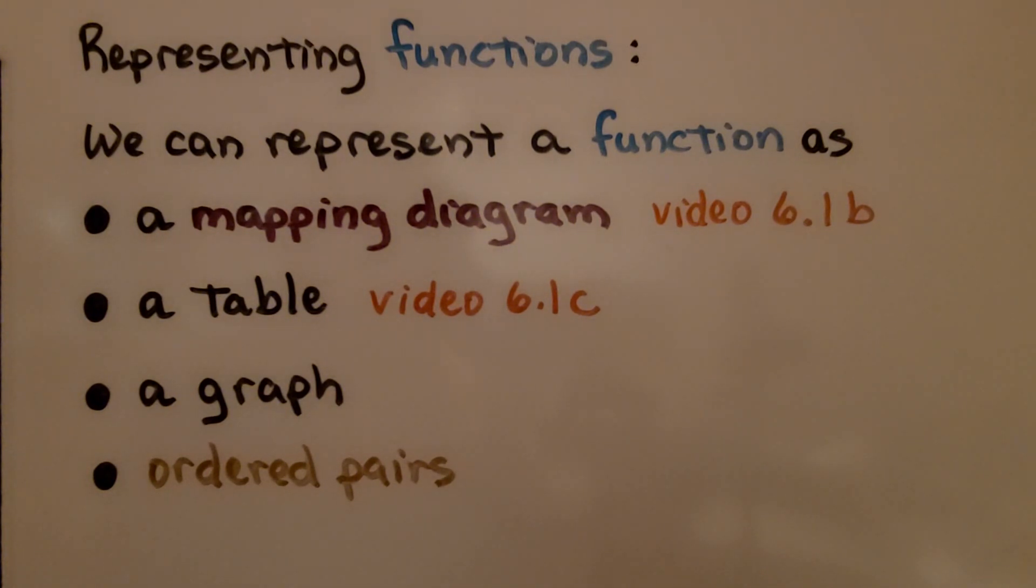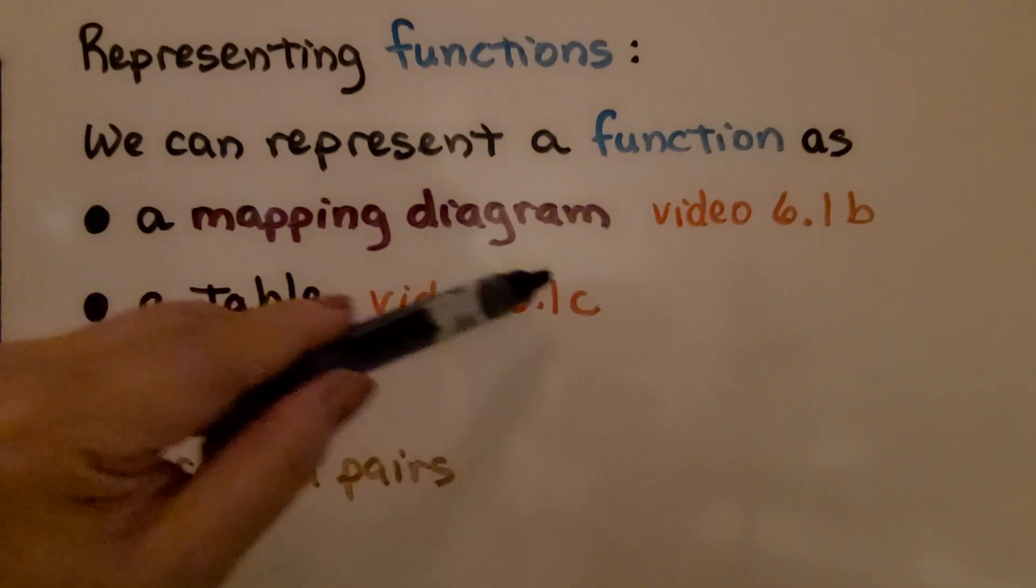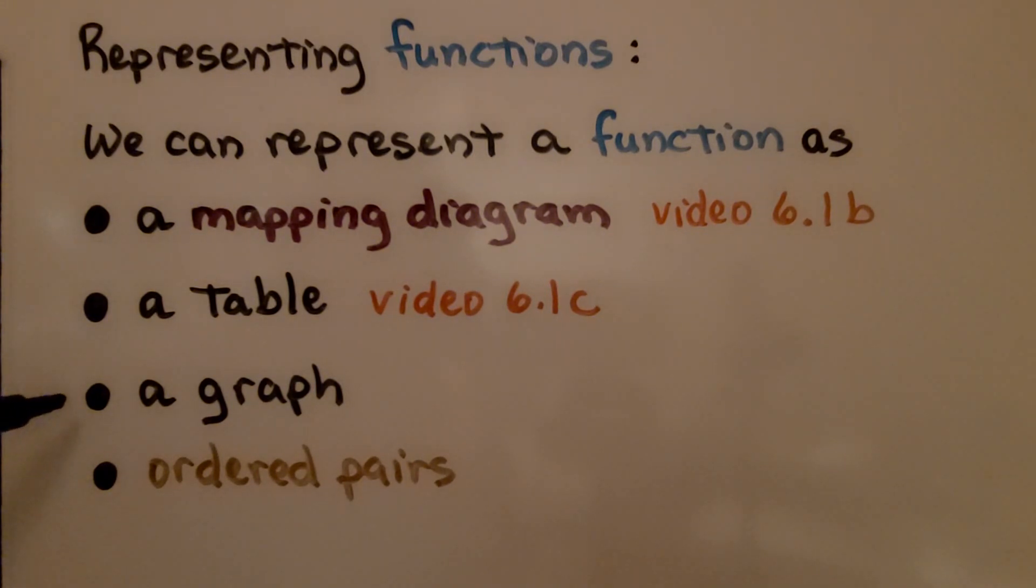There are several ways that we can represent a function. We can represent a function as a mapping diagram. We learned that in 6.1B. And we learned that we can represent it as a table. We learned that in 6.1C. These are linked in the description if you've missed them. Now we've learned that we can represent a function as a graph or ordered pairs.